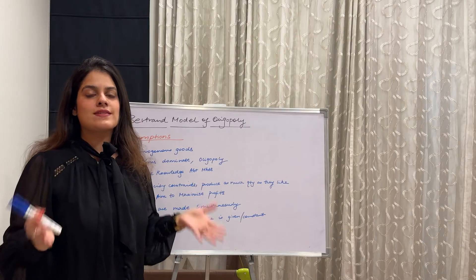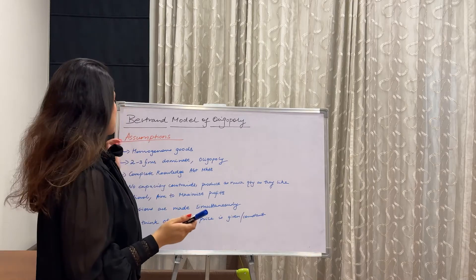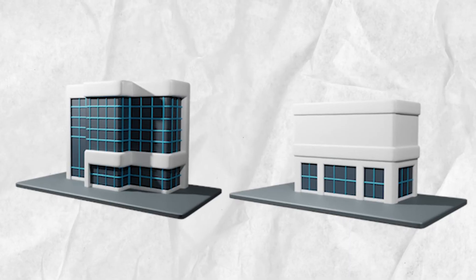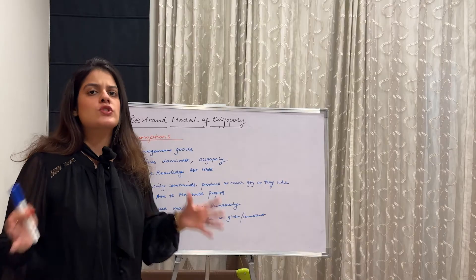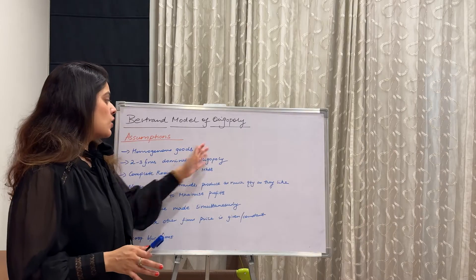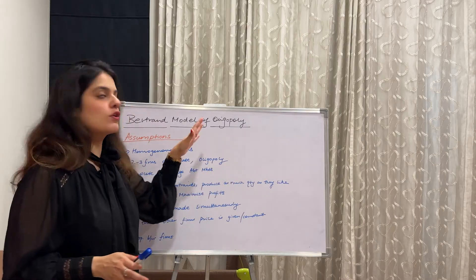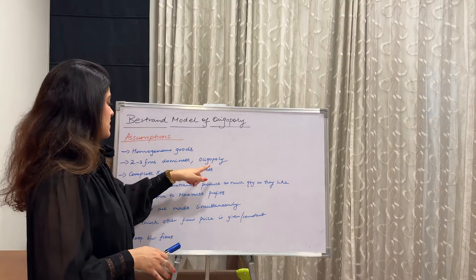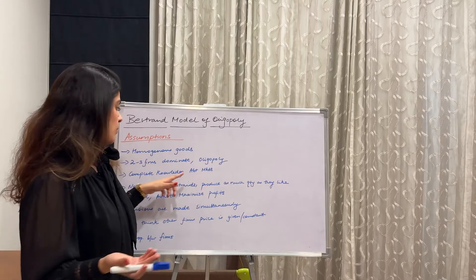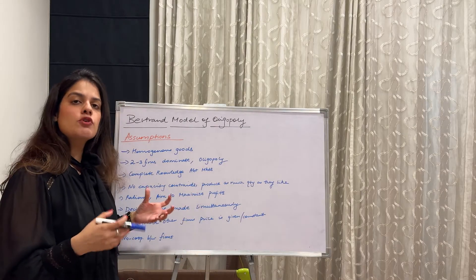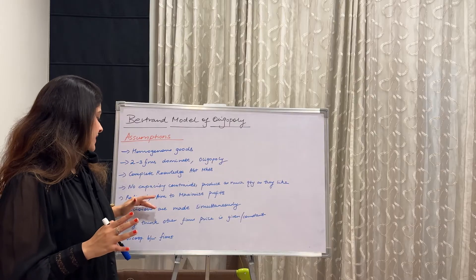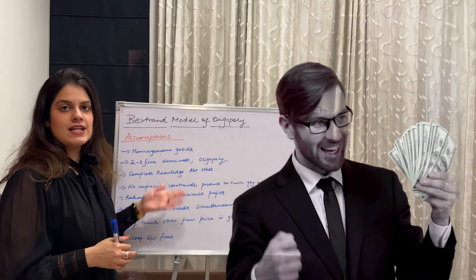Moving to the assumptions — all models are incomplete without them. Number one: both firms produce homogeneous goods, so it's a price war because the products are identical. Second: there are only two or three dominant firms in the market, which is why it's called an oligopoly. Third: they both have complete knowledge about the market. Fourth: there is no capacity constraint — they can produce as many goods as they want. They are rational, and their aim is to maximize profits.